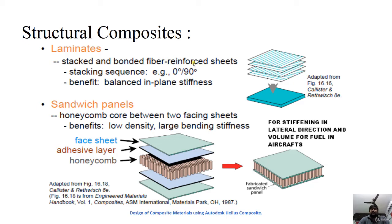In a sandwich composite, a honeycomb core is placed between two face sheets, with an adhesive layer between the face sheet and the honeycomb. Sandwich panels are used for strengthening in the lateral direction, especially in fuselages and fuel tanks of aircraft. The face sheets can be made of metal or composite laminate, and the core can be made of paper, balsa wood, or other materials.